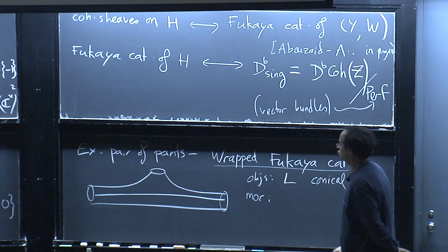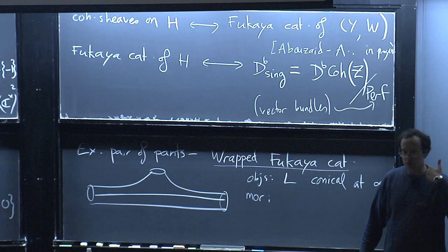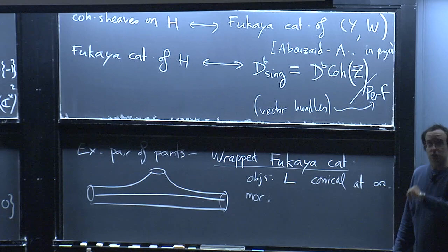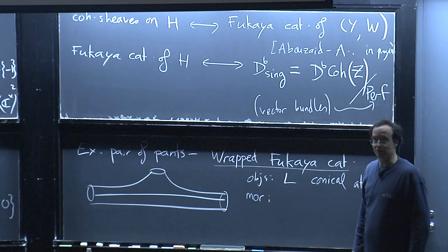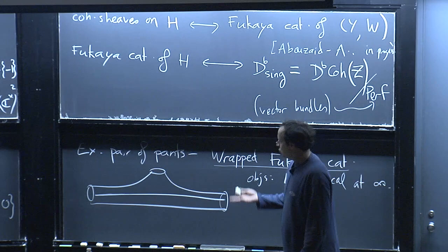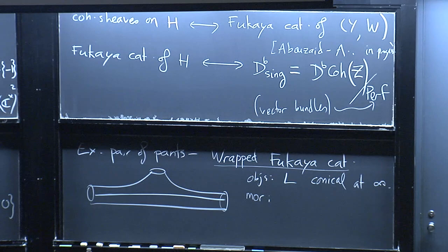Morphisms in usual Fukaya categories are defined by intersections of Lagrangians. The Floer complex of a pair of Lagrangians is a linear span with basis given by intersection points. In the non-compact case, there's not a good intersection theory at infinity, and we want to mix things up with Reeb dynamics on the contact boundary. So before taking intersections, one perturbs Lagrangians by some Hamiltonian flow that wraps the cylindrical ends — that's the reason for the name 'wrapped.'